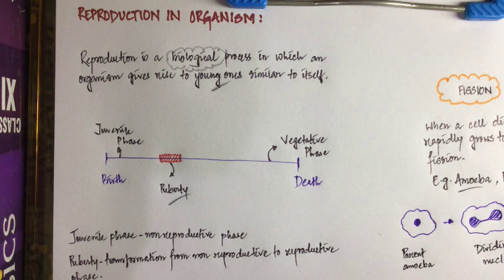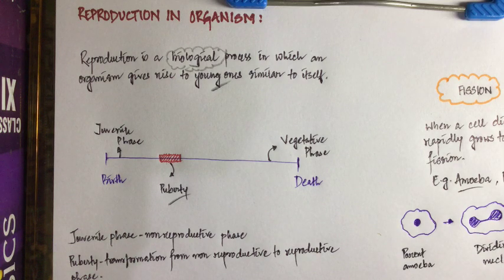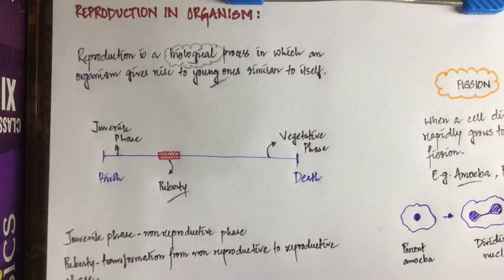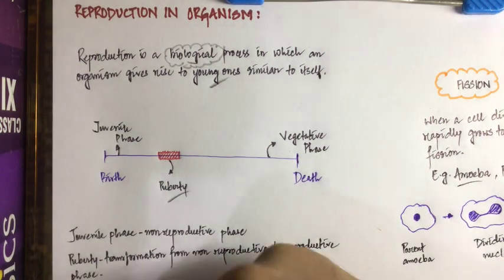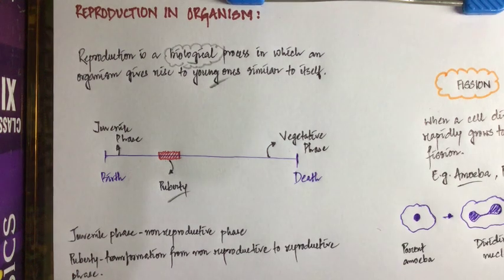So let us start. What is reproduction? Reproduction is basically a biological process in which an organism gives rise to young ones similar to itself. Let us break down this statement: it is a biological process, and it produces organisms which are young and similar to their parents.